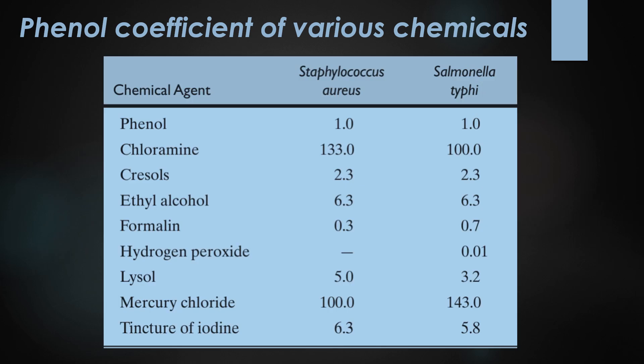This slide shows phenol coefficients of various disinfectants against Staphylococcus aureus and Salmonella typhi, based on the 1903 protocol. A phenol coefficient of one means the chemical agent has about the same effectiveness as phenol. A coefficient of less than one means it is less effective than phenol.